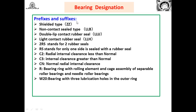Prefixes and suffixes carry specific meanings: ZZ means shield type (non-contact); LLB means double lip contact rubber seal; LLL means light contact rubber seal; LLH is also used; 2RS stands for two rubber seals; RS is one-side shield with rubber seal; C2 means radial internal clearance less than normal; C3 means internal clearance greater than normal; CN means normal radial internal clearance; R means bearing ring with rolling contact and cage assembly; W20 means bearing with three lubrication holes in the outer ring.